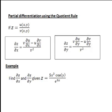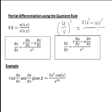Let's look at an example of partial differentiation where we apply the Quotient Rule. You may recall that when differentiating a function of one variable in the form u divided by v, the result is v·u' minus u·v' all divided by v squared.